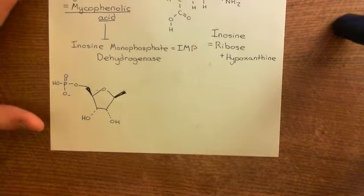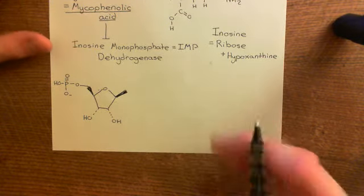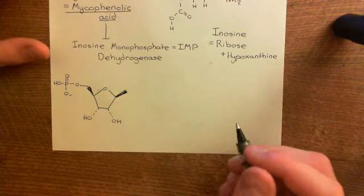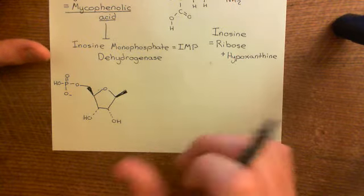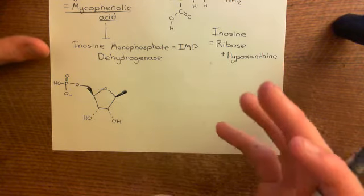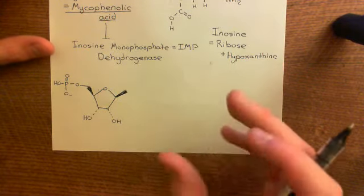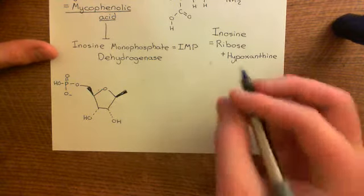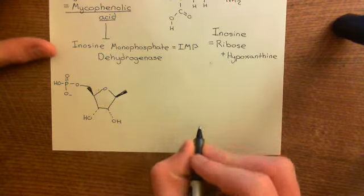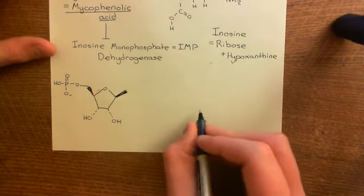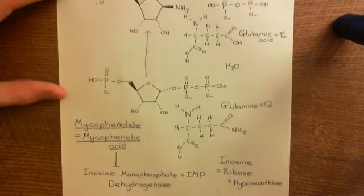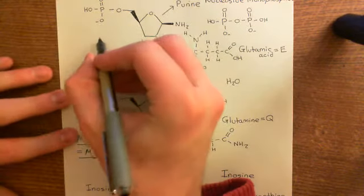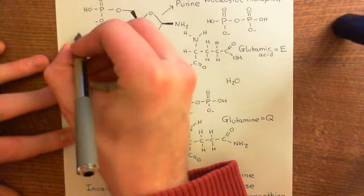Hypoxanthine is what would be called a purine organic base. Purine organic bases are all based on purine rings, so we need to discuss what a purine ring is. In order to discuss what a purine ring is, we need to know what a pyrimidine ring is. Purine rings are going to be made up of pyrimidine rings plus another type of ring — an imidazole ring.